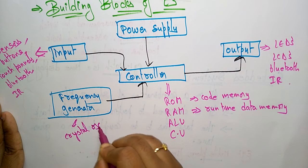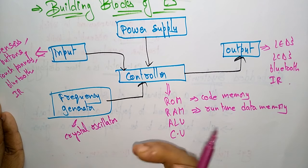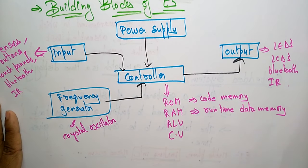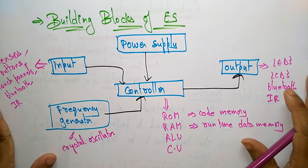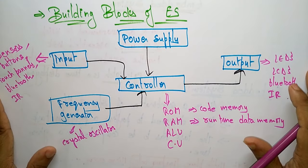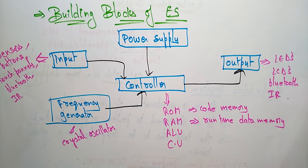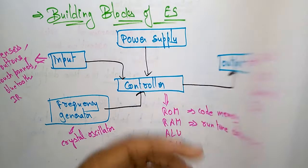The crystal oscillator is used for setting the time for a particular task. So these are the building blocks of an embedded system: power supply, input, output, controller, and frequency generator. That's it — thank you.